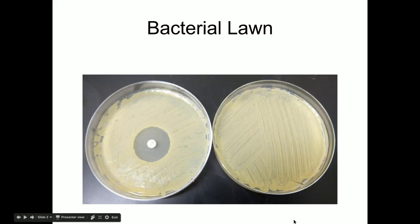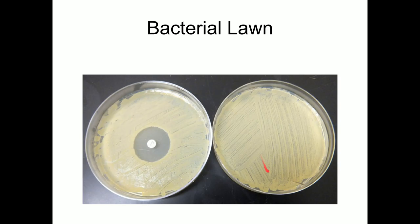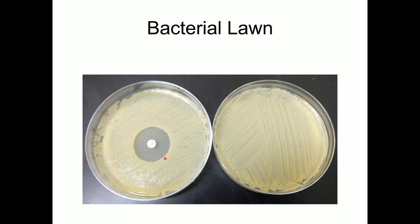These are pictures of a bacterial lawn. On the right side of the screen is a complete lawn all the way across the plate. The left one also has a lawn, except in the middle there's a clear zone of inhibition, because this experiment used an antibiotic disc which killed the bacteria around it. So that's not part of the lawn, but everything else is.